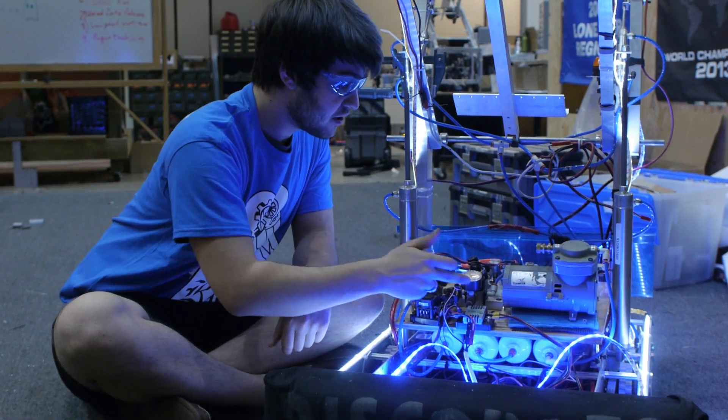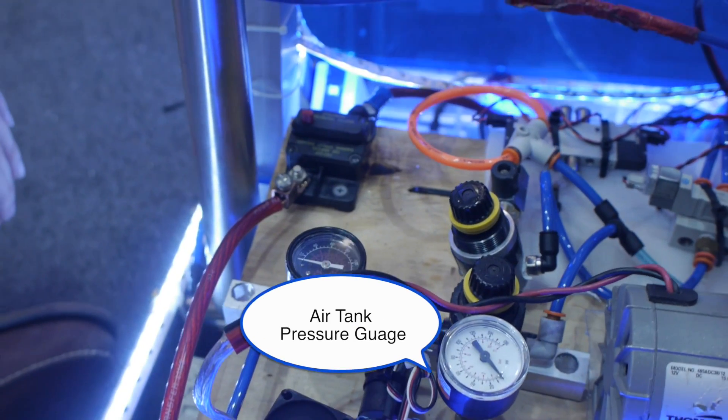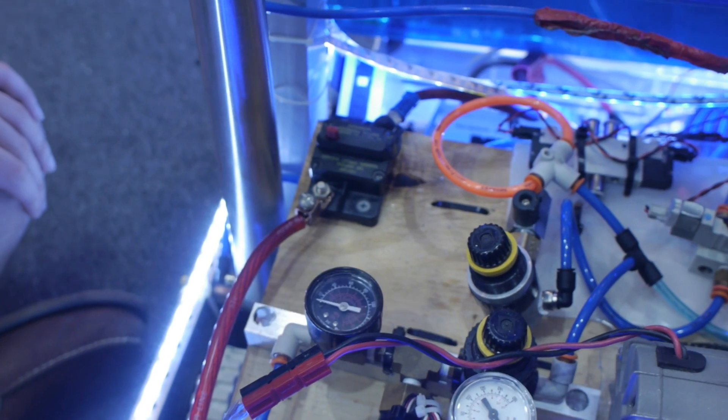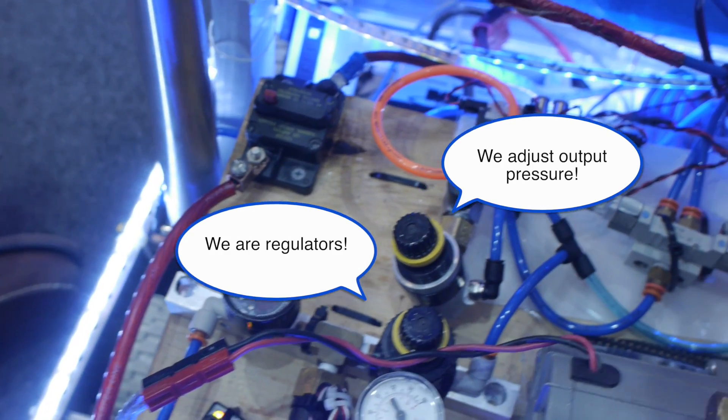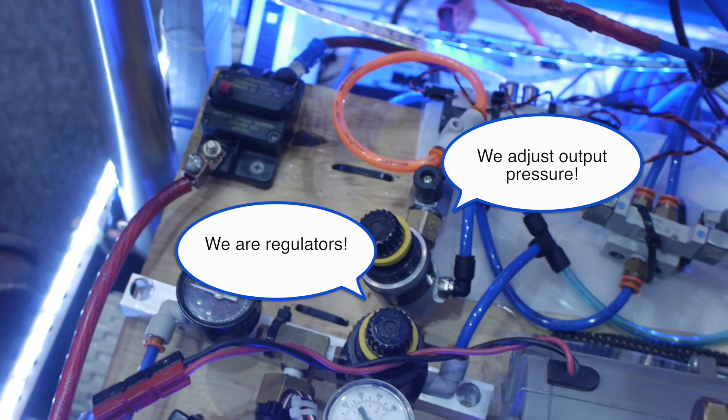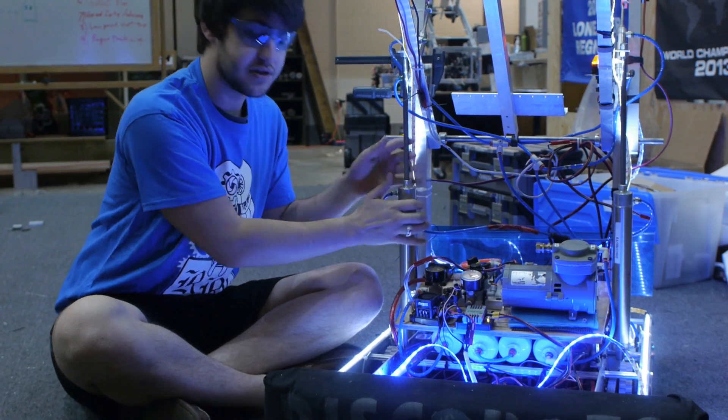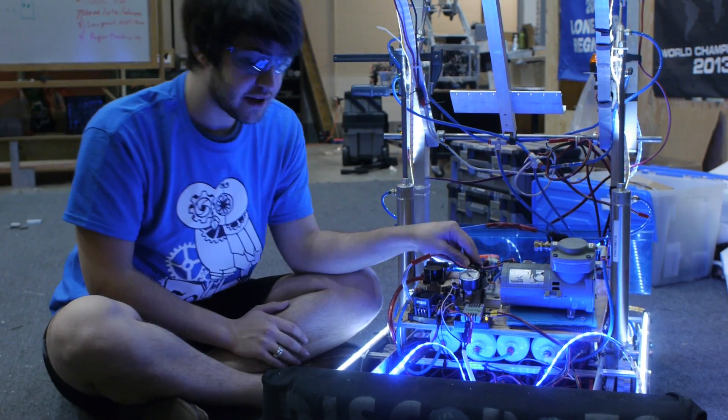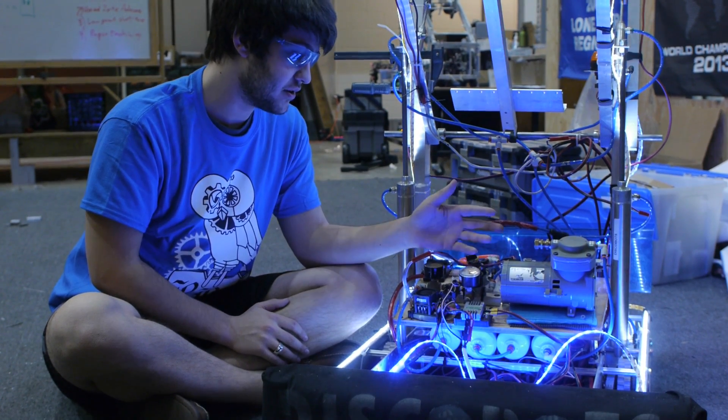From the sensor, it flows into the regulator. You are allowed to use a maximum of 120 psi in your tanks and a maximum of 60 psi in your actuators and cylinders. This valve regulates the output pressure to your solenoids.